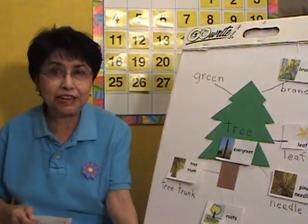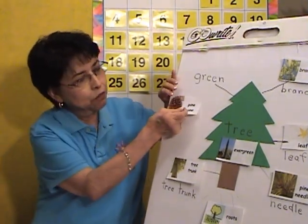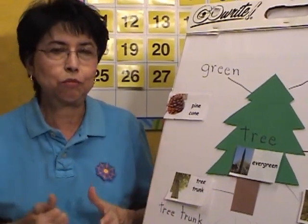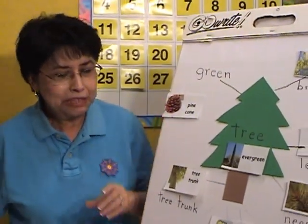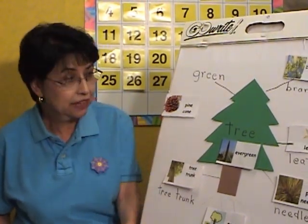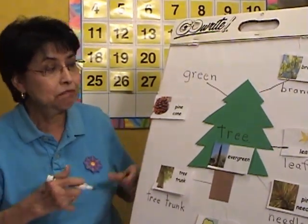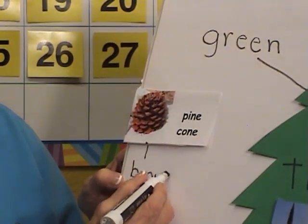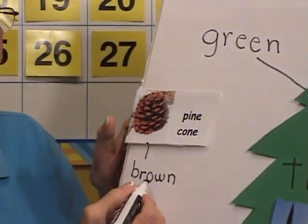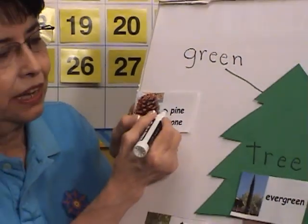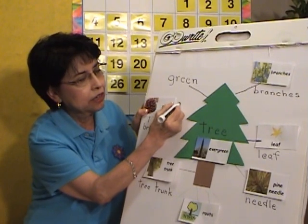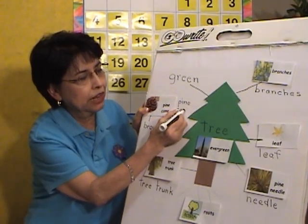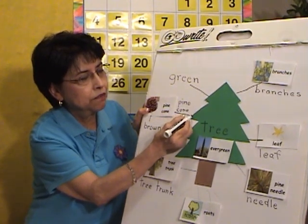Now, what do we call this? A pine cone. Let's take a look at our vocabulary word. These vocabulary words are also in our e-book offered with our whole package of lessons. Tell me something about the pine cone you observed today. A child may say it's brown. I'm going to write here: brown, B-R-O-W-N. The pine cone is brown. Let's also write the word pine cone: pine, P-I-N-E, cone, C-O-N-E. The pine cone comes from the pine tree.